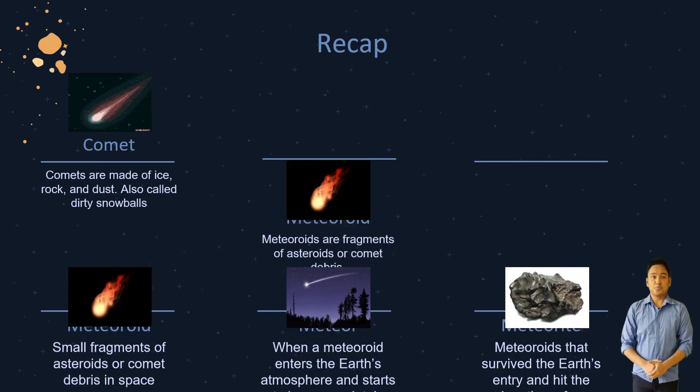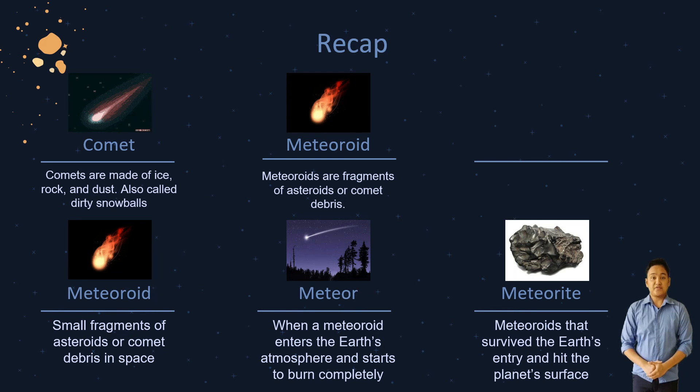Meteoroids are smaller rock or metallic rocks that came from asteroid debris or comet debris. When a meteoroid enters our atmosphere, it burns up and leaves a trail of light. This burning meteoroid is now called a meteor or a shooting star. When a meteoroid survives the Earth's atmosphere and lands on our ground, it is now called a meteorite.